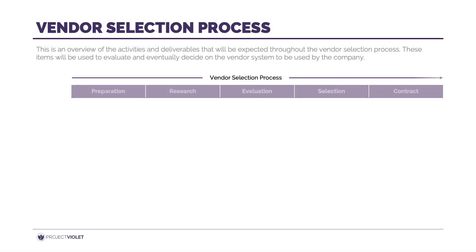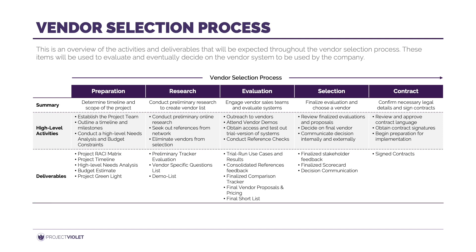It's always good to have a roadmap and expectations of where you're going. This can be summarized in a kickoff meeting to really align the team on what needs to get done and in what time frame. Here is an outline of what the vendor selection process can look like, with the critical sections of the process in chronological order and below the main activities and deliverables for each area.